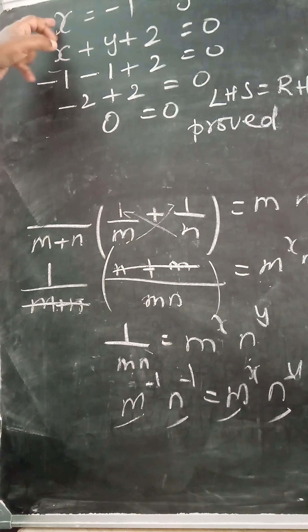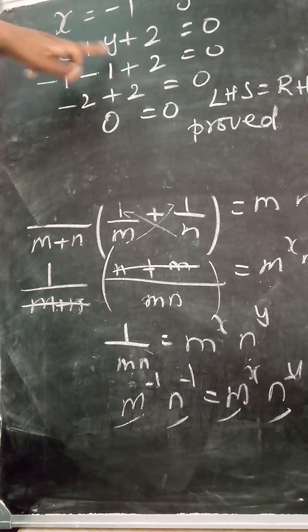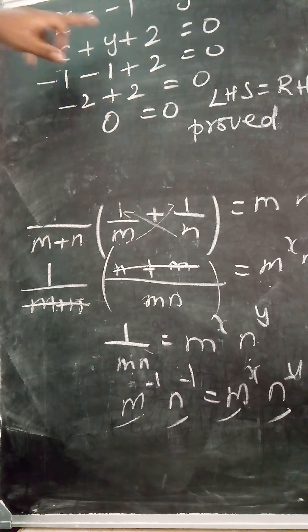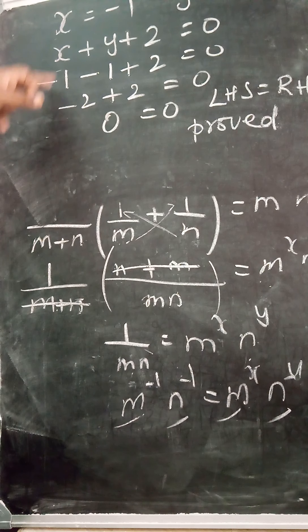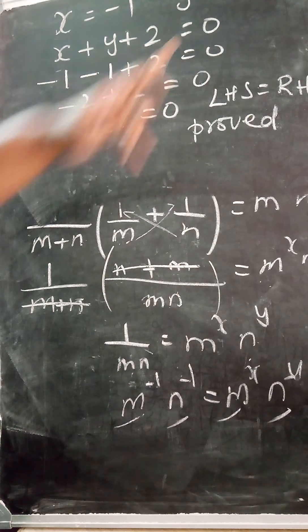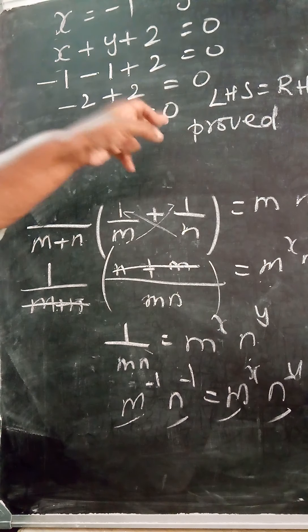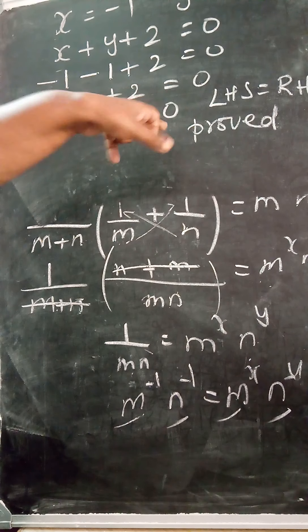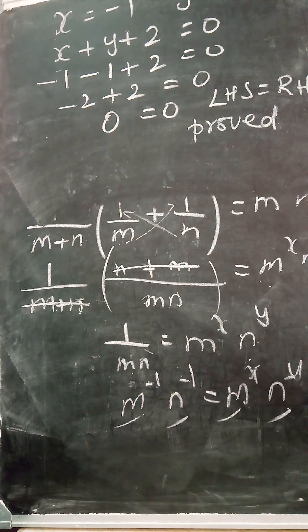After finding x = -1 and y = -1, take the equation to prove — x + y + 2 = 0 — and substitute: (-1) + (-1) + 2. Minus 1 minus 1 is minus 2, plus 2 equals 0. Both sides equal 0, so LHS equals RHS. Hence proved. LHS is left-hand side, RHS is right-hand side.